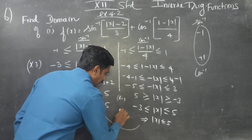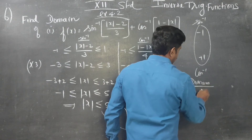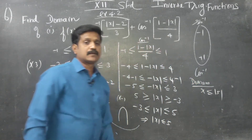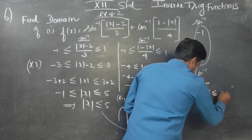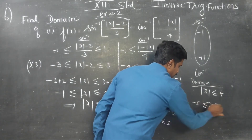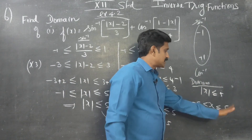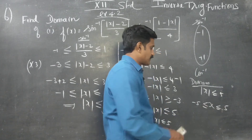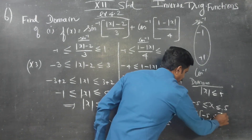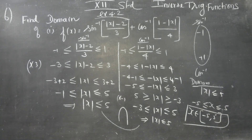From the two conditions, we need the intersection. The intersection of both results gives: mod x less than or equal to 5. Without the modulus notation, this means x goes from minus 5 to plus 5. So the domain is x belongs to the closed interval minus 5 to plus 5. This is the final domain for this sum.